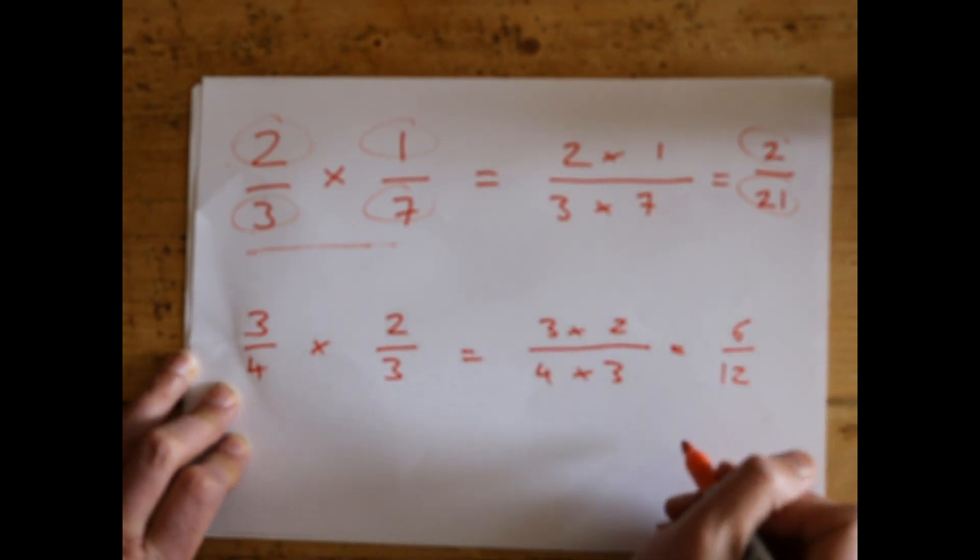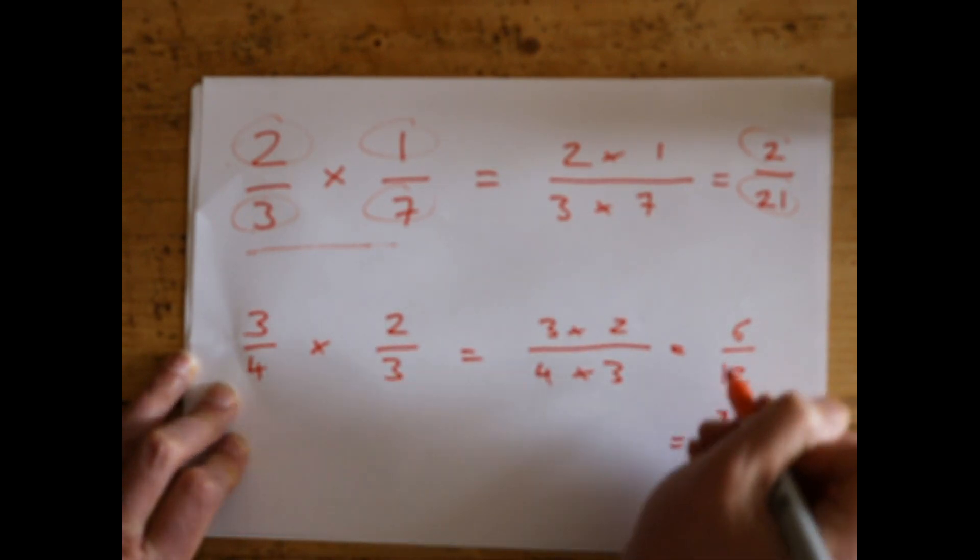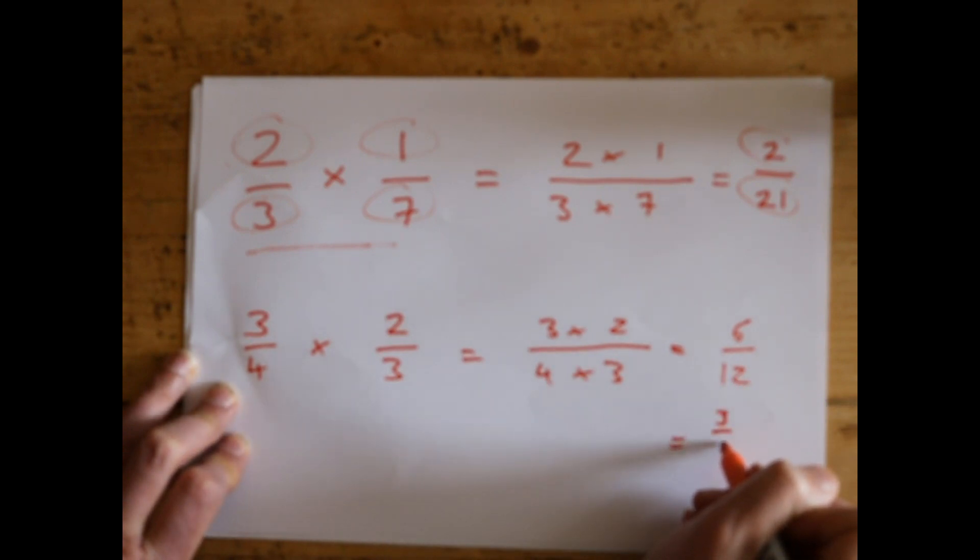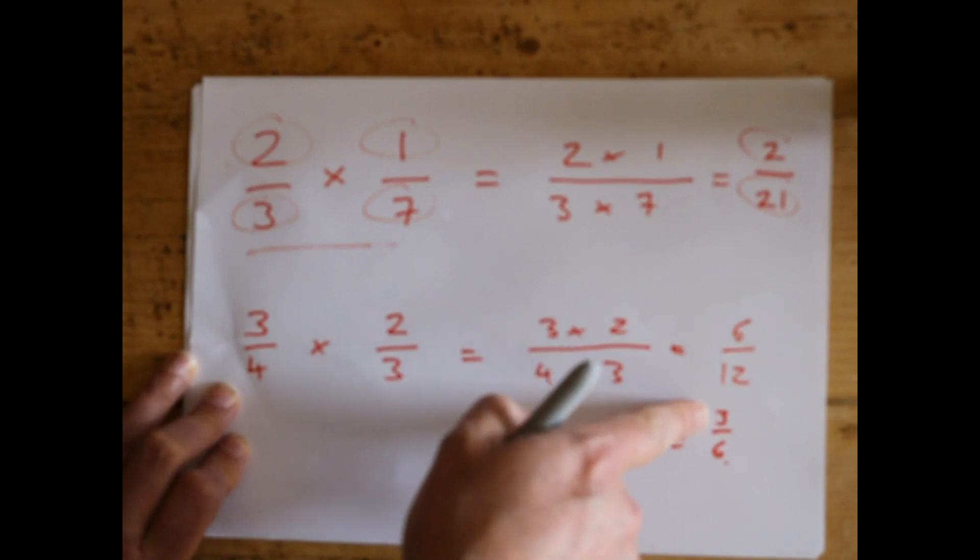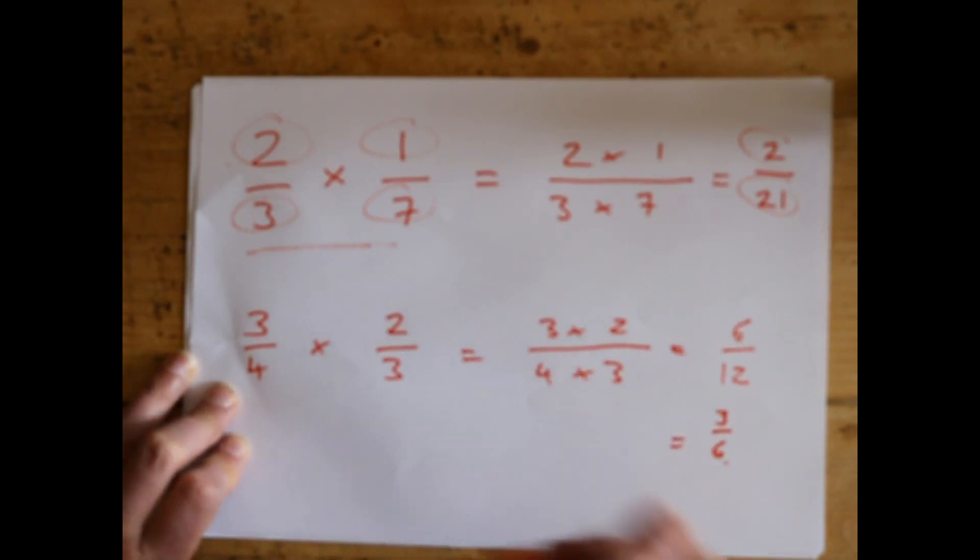Now 6/12 is a perfectly good answer, but as you can see, both top and bottom are even, so we can divide them both by two. Six divided by two is three, and twelve divided by two is six. Again, 3/6 is a good answer, but it's not the best because they both divide by three. Three divided by three is one, and six divided by three is two.